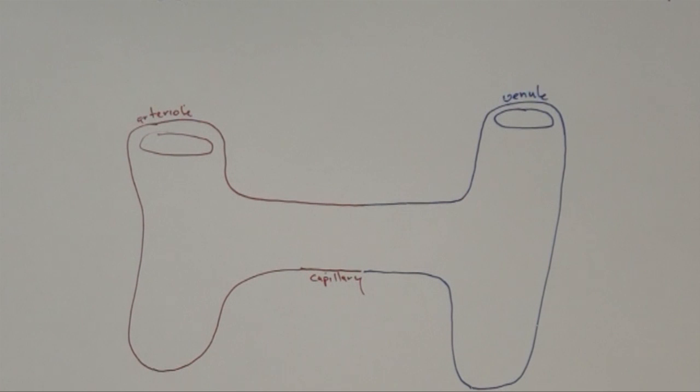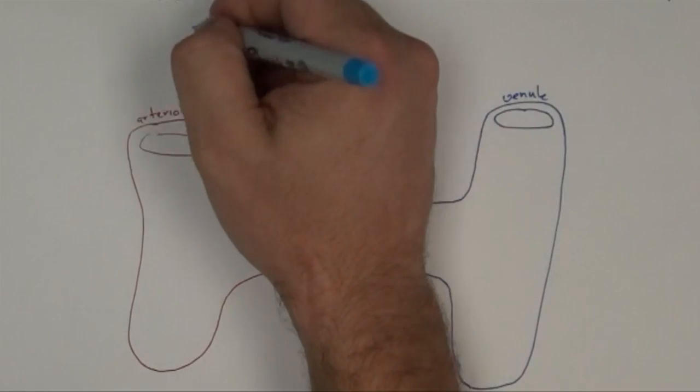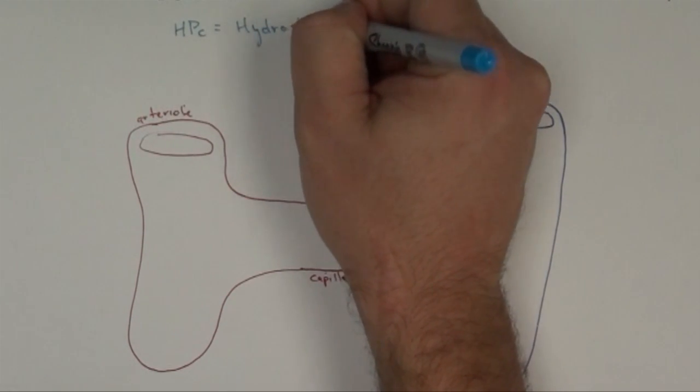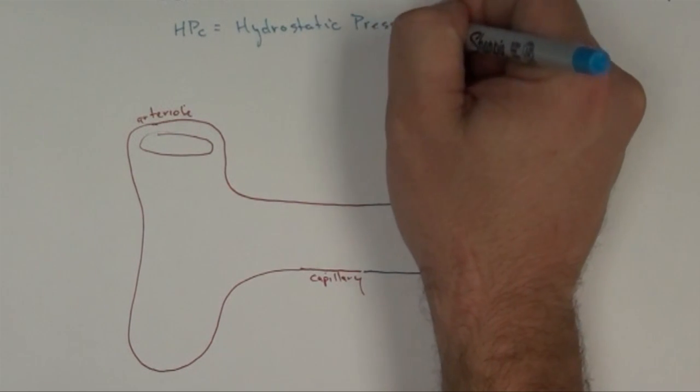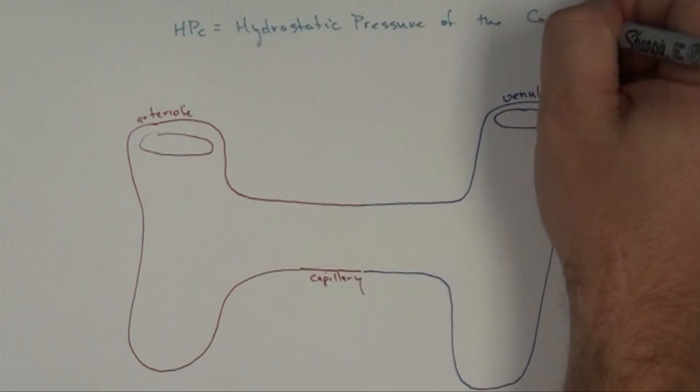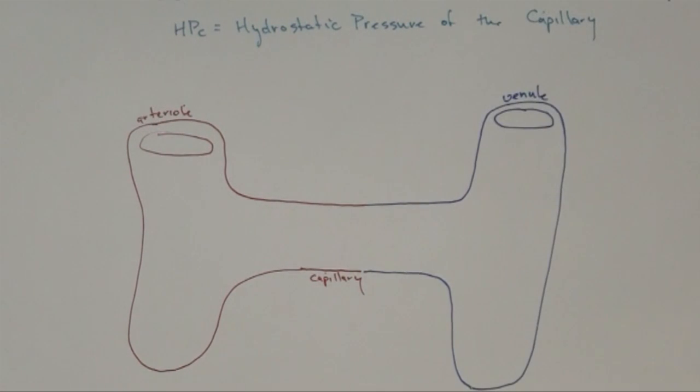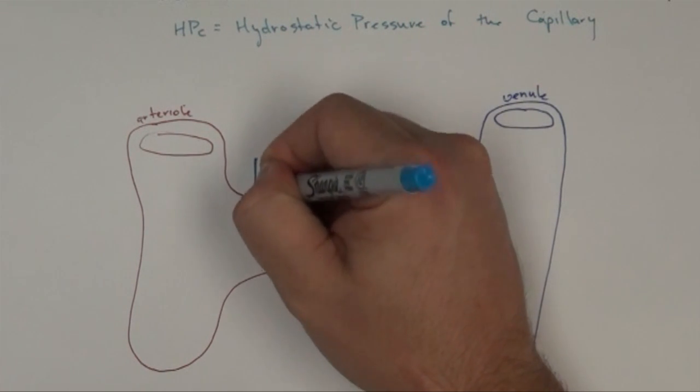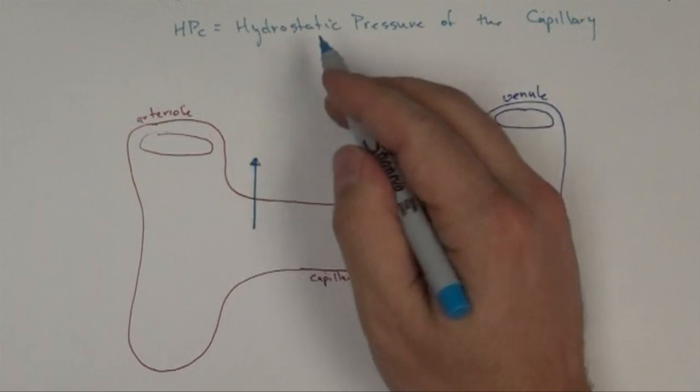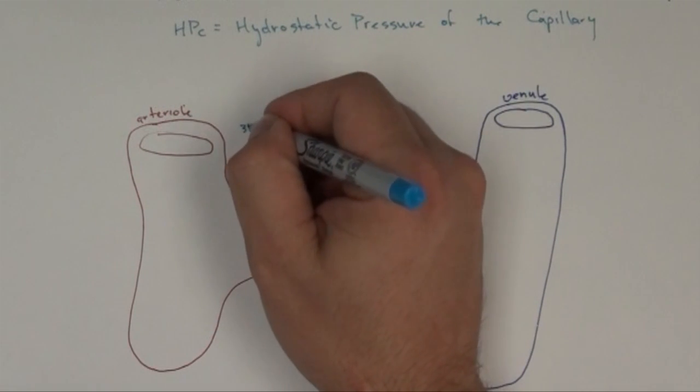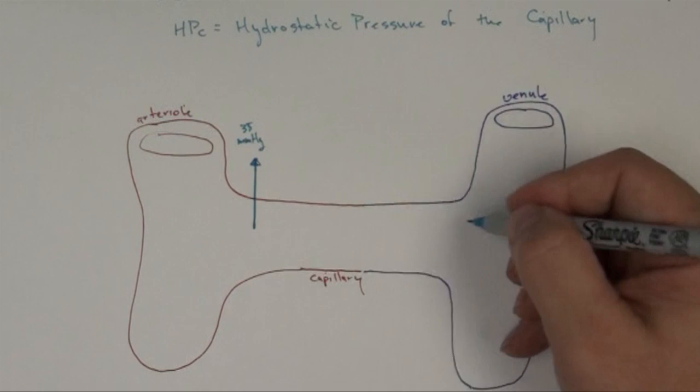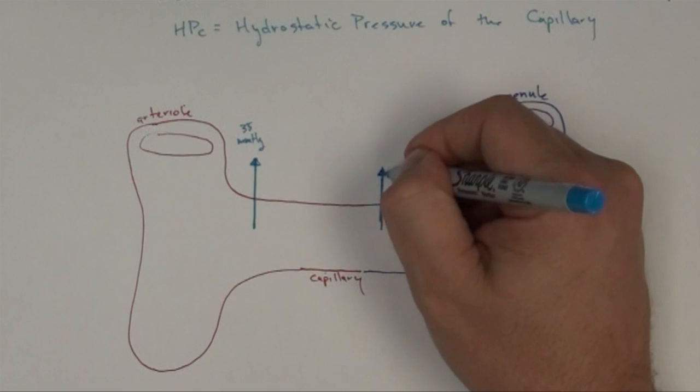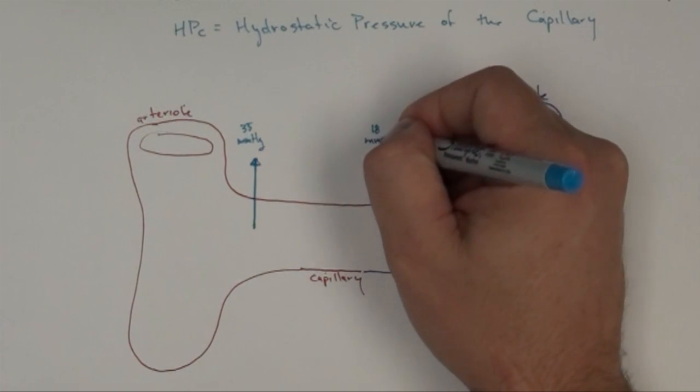The first thing we need to talk about is a couple of pressures. The first one is called HPC, that stands for hydrostatic pressure of the capillary. That's essentially blood pressure. At this end, one of the interesting things about these pressures is they change by end. So the hydrostatic pressure is 35 millimeters of mercury at this end. By the time we drop to the other end, it's gotten a little smaller because it's dropped to 18 millimeters of mercury.